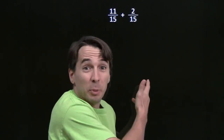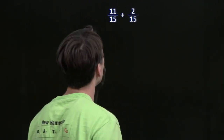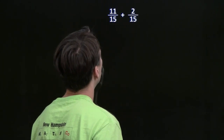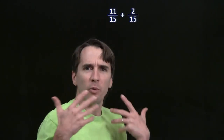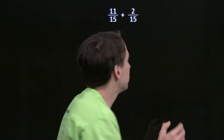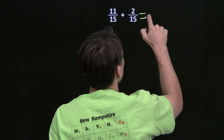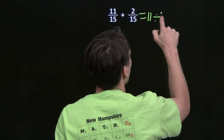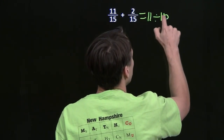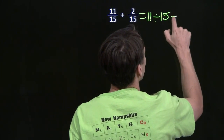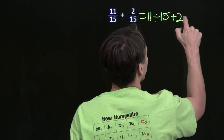What are we going to do? I know how to multiply fractions by adding fractions. Well, let's think about what fractions actually are. They're divisions, right? Division leads to a number. Let's write those divisions down: 11 divided by 15, and that one is 2 divided by 15.